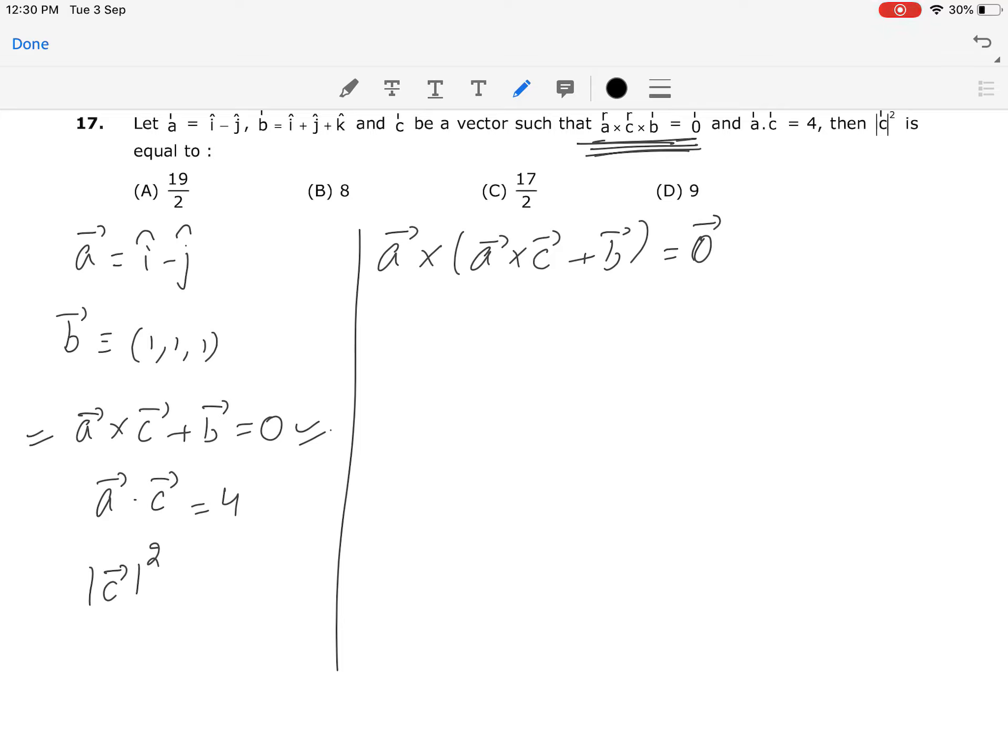It can now be written as a vector cross of a vector cross c vector plus a vector cross b vector equals 0. This is nothing but a VTP, vector triple product. It will be a vector dot c vector times a vector minus a vector dot a vector times c vector. The other statement remains the same: a vector cross b vector equals 0.